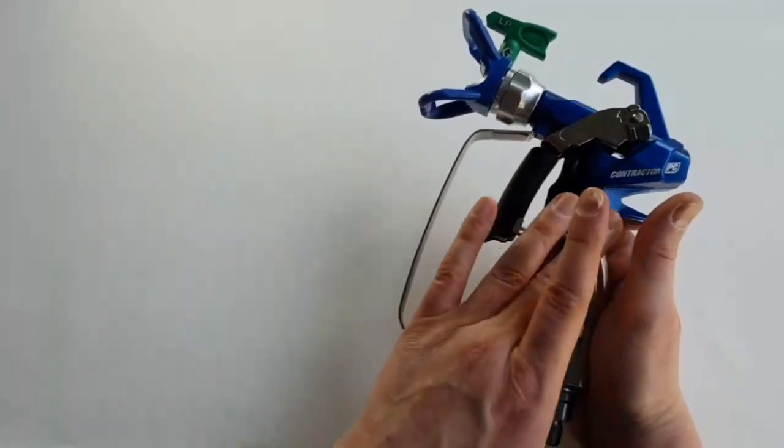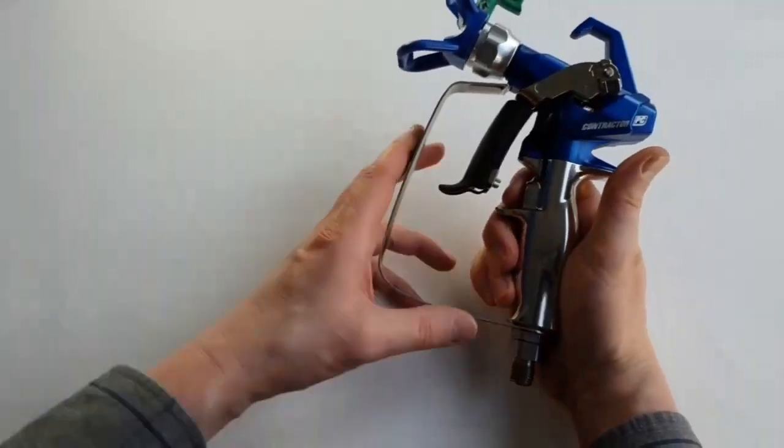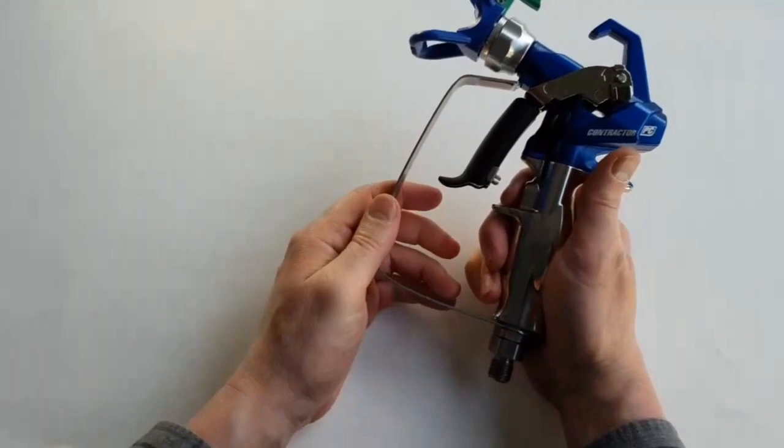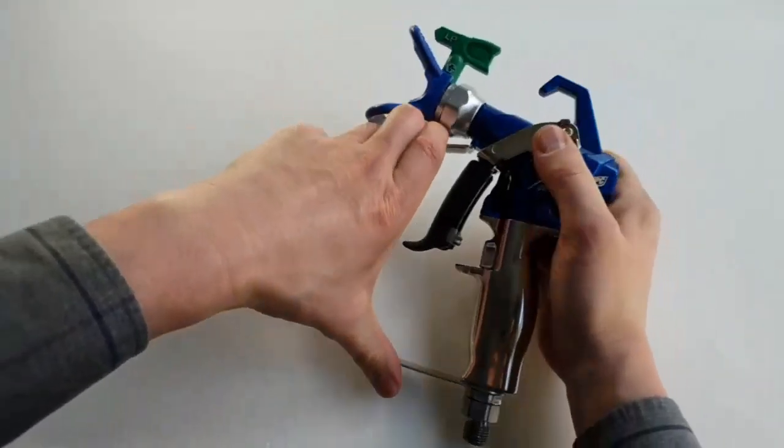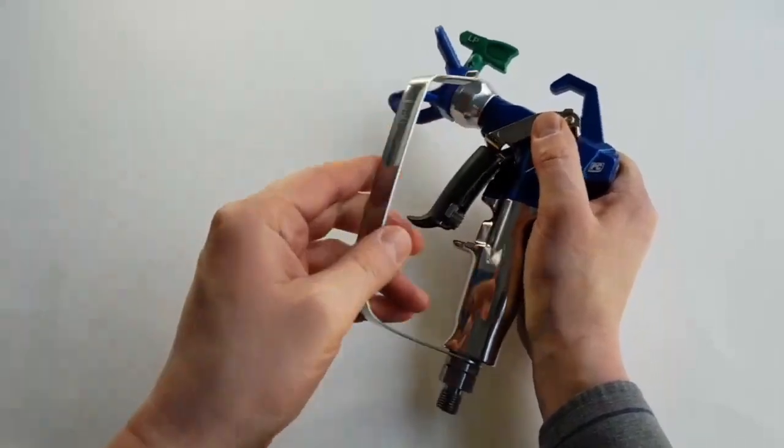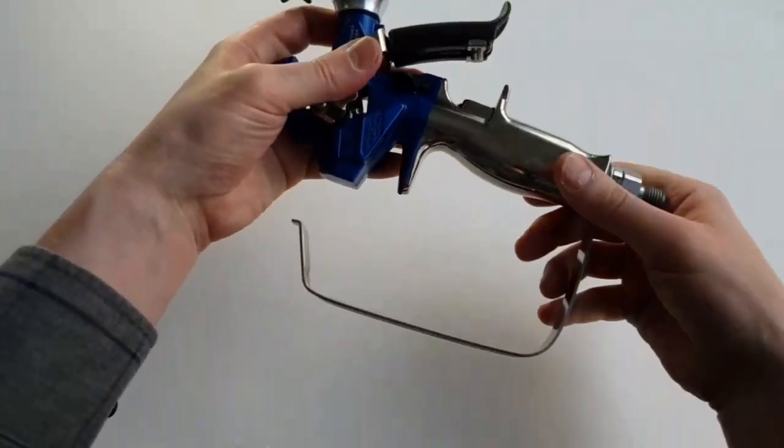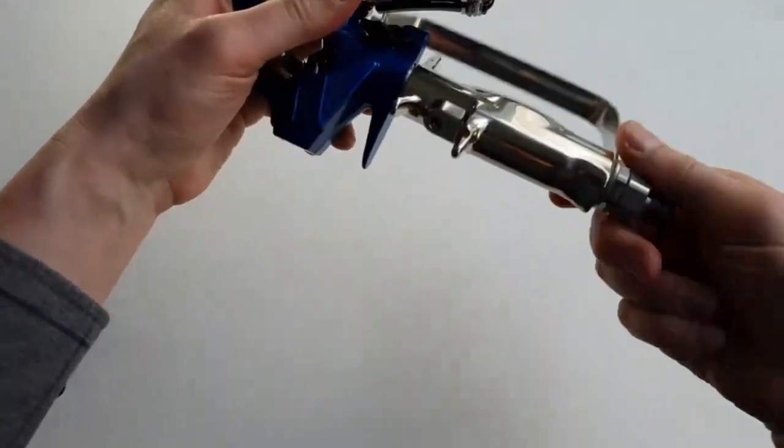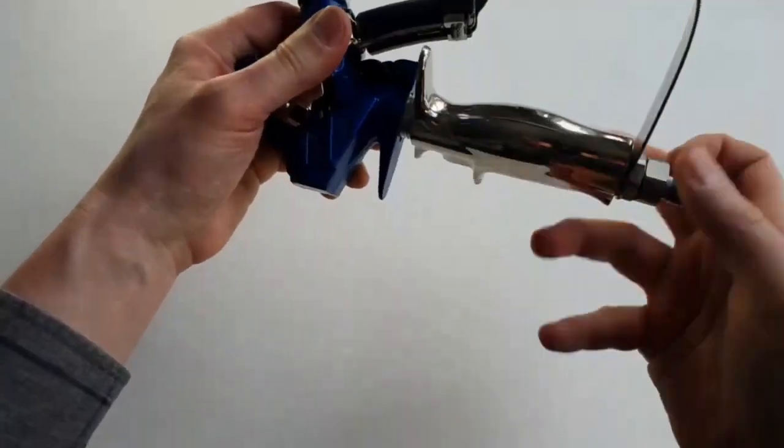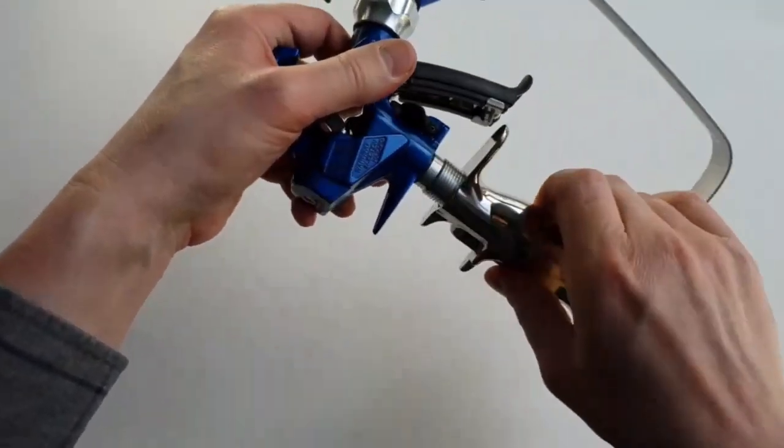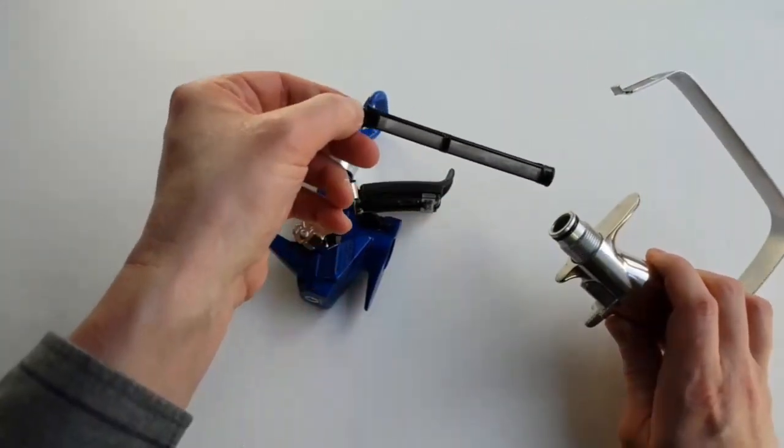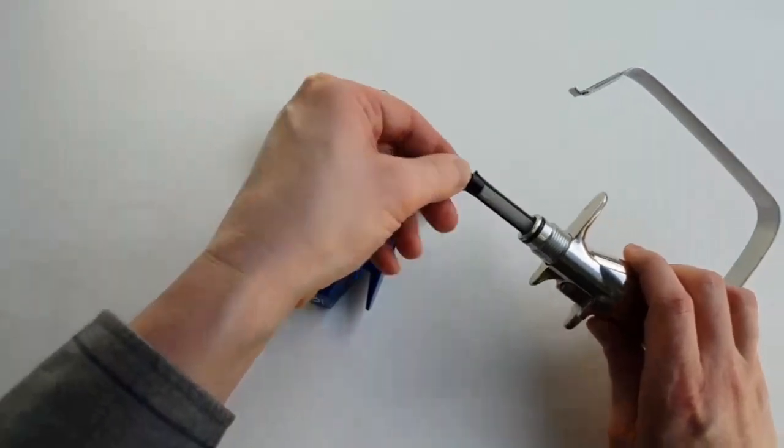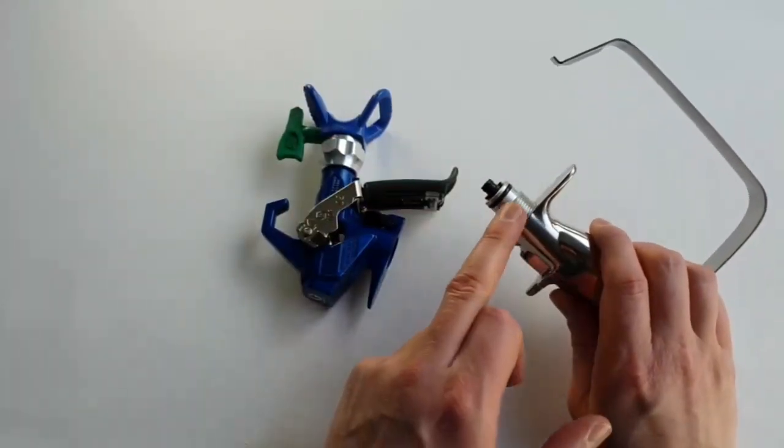It also comes with the spray gun filter that's already inside the handle. To replace or inspect, just pop off the hand guard or finger guard. It pops off at the top which is slightly different to the previous model, as the other one pops off at the bottom. You just screw off the handle and the filter comes out. This is a number 60 mesh classic spray gun filter which is included in the delivery.